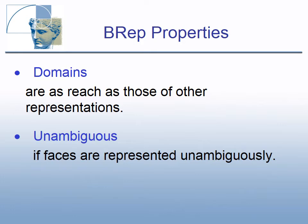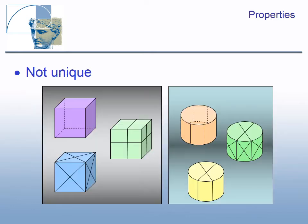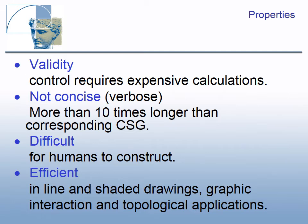It is an ambiguous representation, if faces are represented unambiguously. As illustrated in these two pictures, a purple cube or an orange cylinder can be represented by many different BREPs — it means this representation is not unique. Validity of BREP is a huge problem, because control of cracks between faces requires expensive calculations. BREP is not concise at all; BREP files are about 10 to 1000 times bigger than corresponding constructive solid geometry.